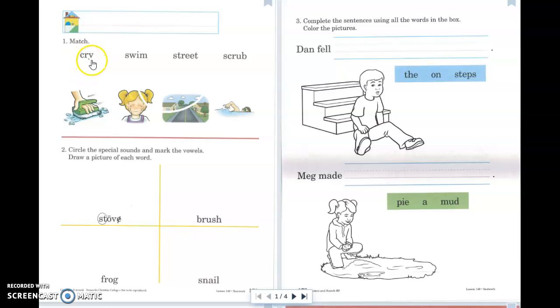So the first word is C-R-Y. We have the C and the R, which says kr, and then the Y that says I, cry. So I need to connect cry to the picture of the girl crying.